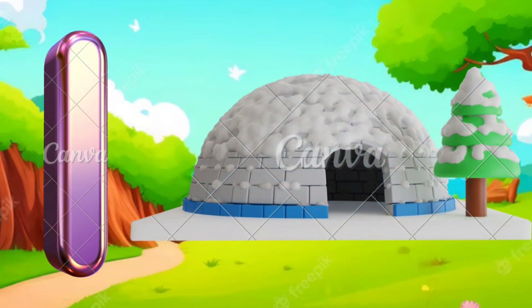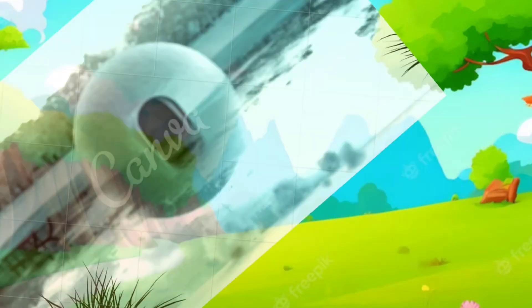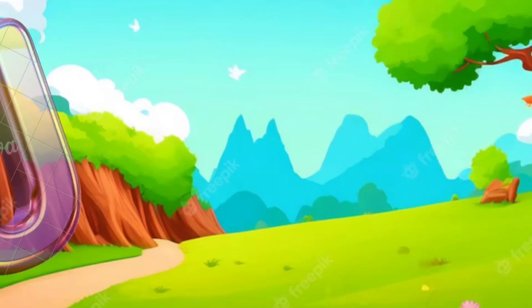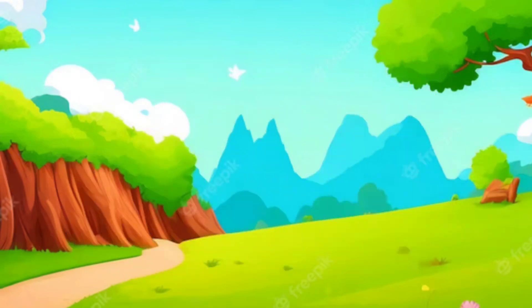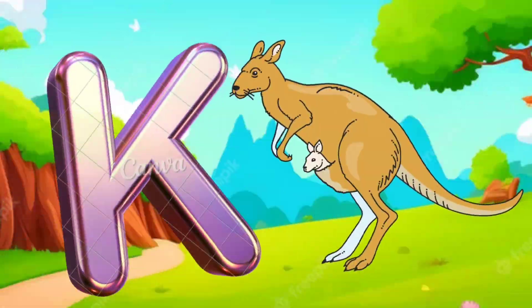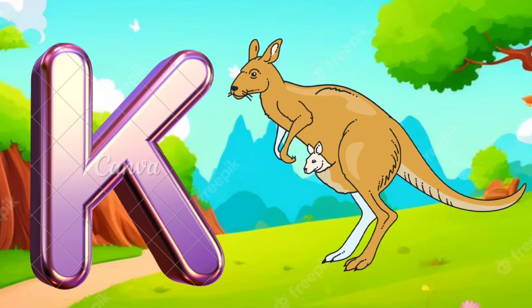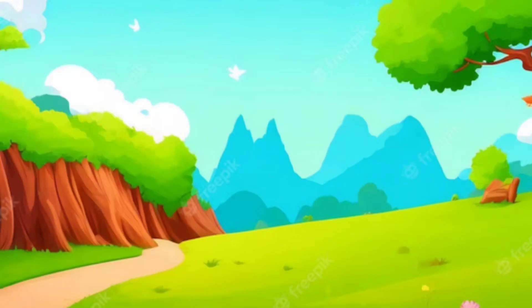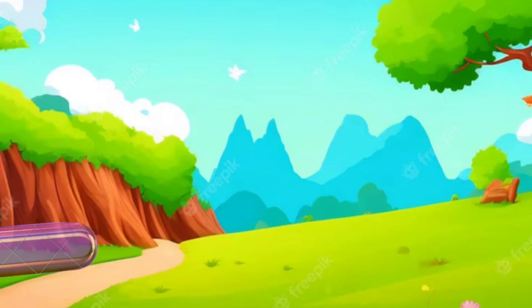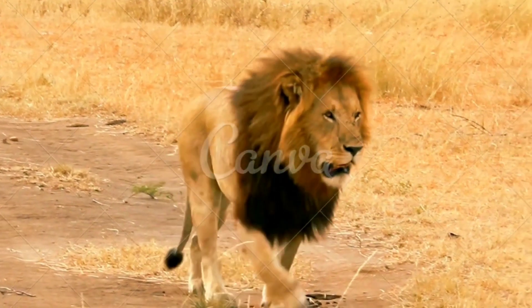I is for Igloo, I-I-Igloo. J is for Jump, J-J-Jump. K is for Kangaroo, K-K-Kangaroo. L is for Lion, L-L-Lion.